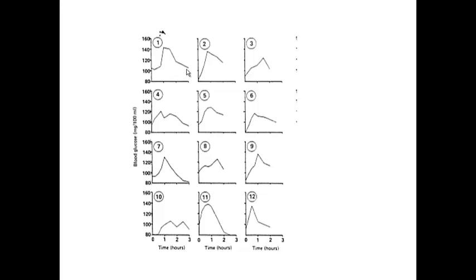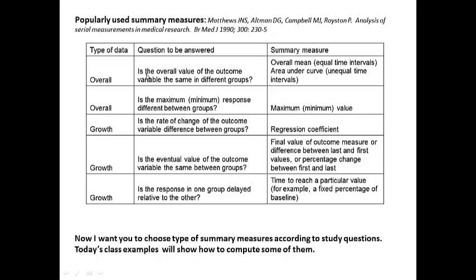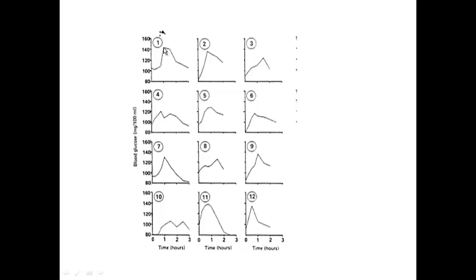The choice of summary measure depends on your study hypothesis. If your question is whether the overall value of the outcome variable — overall glucose — is the same in different groups, then you might use the mean or summation of all repeated measures, or area under the curve measurements. If your question is whether the maximum response differs between groups, then you might use the maximum value per patient and compare it between groups.